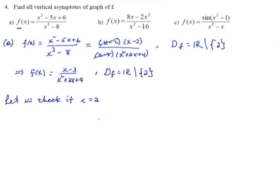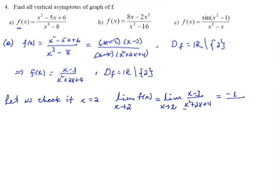Let's check if x equals 2 is a vertical asymptote according to the definition. If x equals 2 is a vertical asymptote, the limit of the function as x approaches 2 must be positive or negative infinity. The limit of (x minus 3) over (x squared plus 2x plus 4) as x approaches 2 — if you directly substitute 2, it becomes 2 minus 3 which is negative 1, over 2 squared plus 2 times 2 plus 4 which is 12. So the limit is negative 1 over 12.